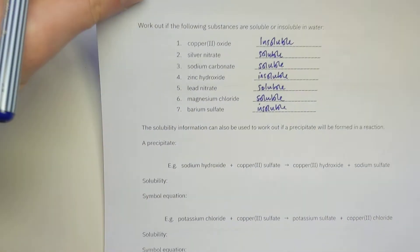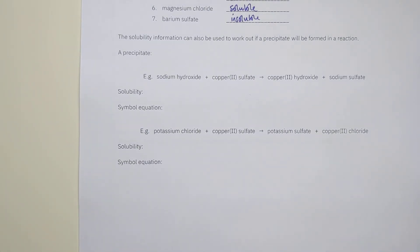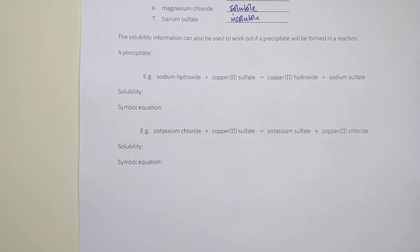We can extend this by using solubility information to predict whether a precipitate will form in a reaction. A precipitate is a solid formed from two solutions — the solutions react to make a salt which happens to be insoluble in water. When you make something insoluble in water, it turns into a solid, which is what you see as a precipitate.